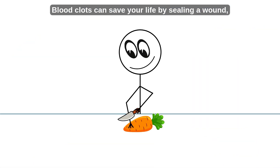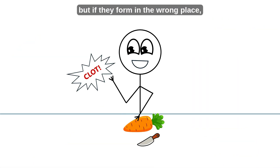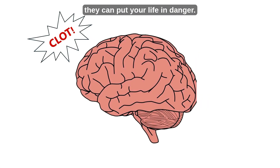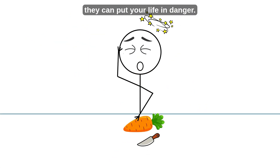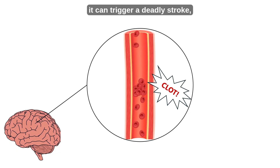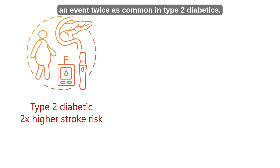Blood clots can save your life by sealing a wound, but if they form in the wrong place, they can put your life in danger. When a clot blocks blood flow to the brain, it can trigger a deadly stroke, an event twice as common in type 2 diabetics.